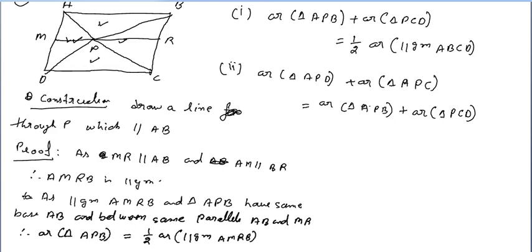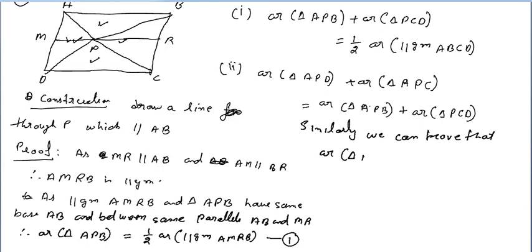Similarly, we can prove that area of triangle DPC equals half the area of parallelogram MDCR. This is equation number 2.